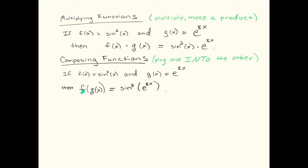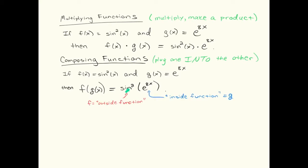Here's an example. f of g of x — what is this? It's the f function with the g of x plugged into it. Our f function is sine squared. Plugged into that will be the g function, so I get sine squared with e to the 8x plugged into it. As you can see, this is not multiplication. It's composition. Sine squared is the outside function, and the e to the 8x is the inside function.